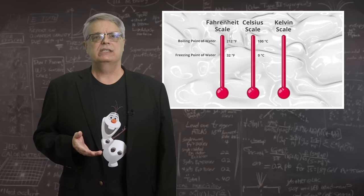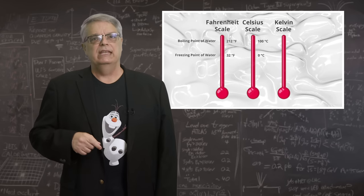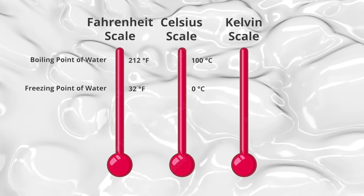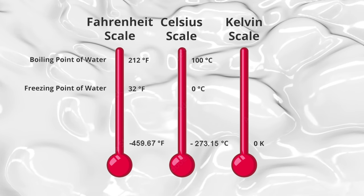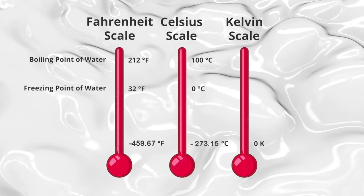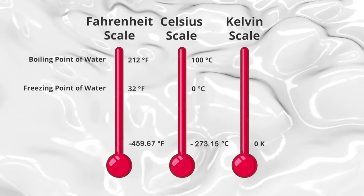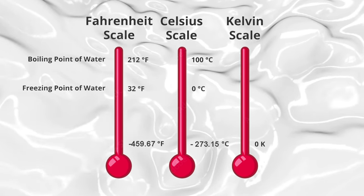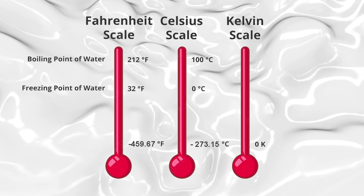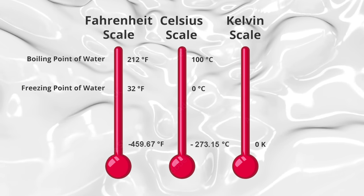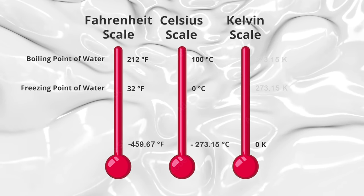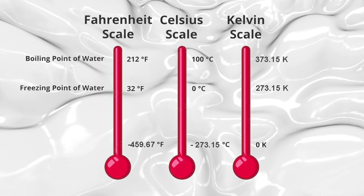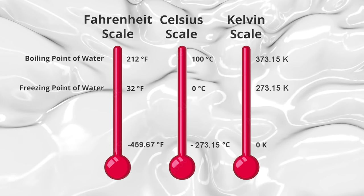Physicists use the Kelvin scale for most things. In the Kelvin scale, this lowest temperature, which is called absolute zero by the way, is defined to be zero. Zero degrees Kelvin is equal to minus 273.15 degrees Celsius and minus 459.67 degrees Fahrenheit. And to be complete, in the Kelvin scale, water freezes at 273.15 and boils at 373.15 Kelvin.